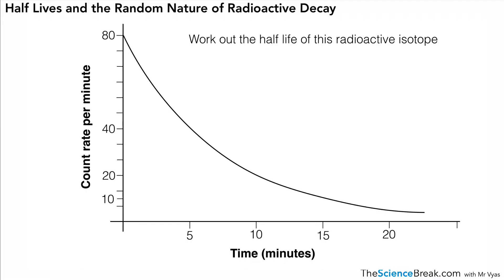A second thing we can do is work out the half-life given the decay curve. Here we've got a decay curve—this time the time is in minutes and the count rate per minute starts at 80. To work out the half-life we start at 80 and work out what half of 80 is, which is 40. From point 40 we go across till we meet the curve, draw a line down, and that gives us our half-life—in this case, five minutes.